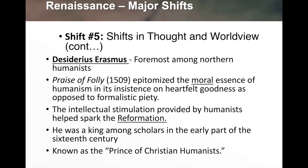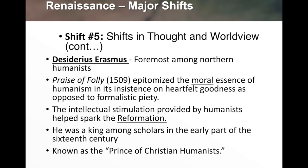Foremost among northern European humanists was Desiderius Erasmus. He wrote 'The Praise of Folly' in 1509, which epitomized the moral essence of humanism, insisting on heartfelt goodness as opposed to formalistic piety — the idea that people can be good without the Church's prescribed rituals. The intellectual stimulation provided by humanists helped spark the Reformation. Erasmus was known as the Prince of Christian Humanists and was king among scholars in the early 16th century.